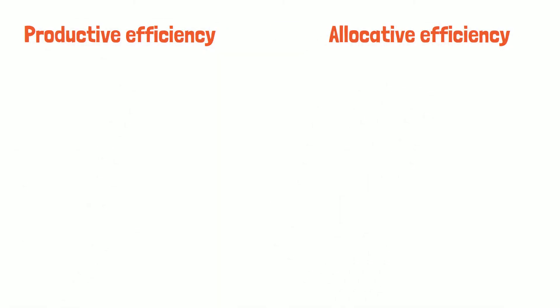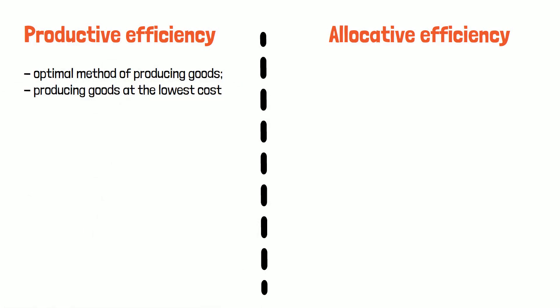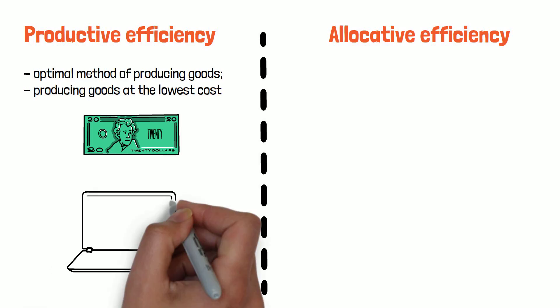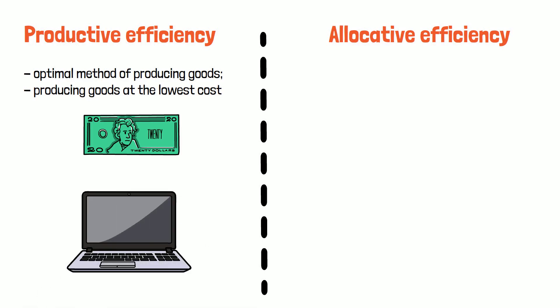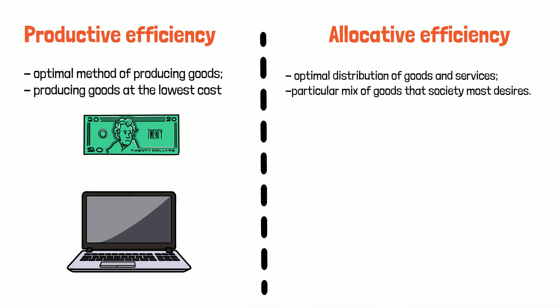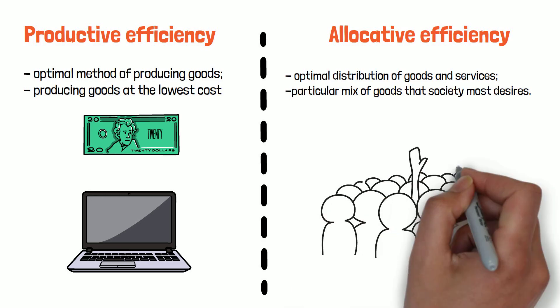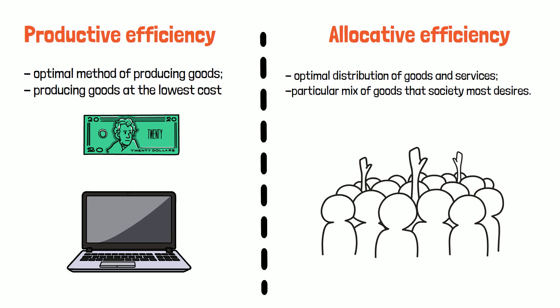Let's wrap this episode by stating the difference between productive and allocative efficiency. Productive efficiency is concerned with the optimal method of producing goods — producing goods at the lowest cost. It means that, given the available inputs and technology, it is impossible to produce more of one good without decreasing the quantity of another good that's produced. Allocative efficiency is concerned with the optimal distribution of goods and services. It means that the particular mix of goods a society produces represents the combination that society most desires.